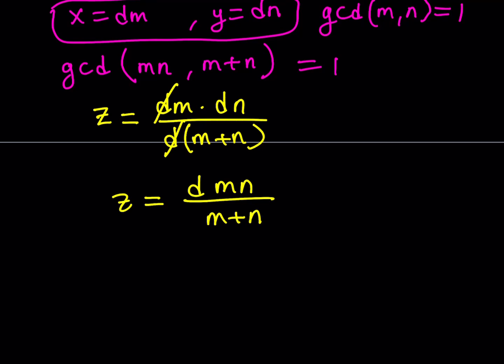Now, think about this. m plus n and mn are relatively prime. So, there is no way m plus n is going to divide mn. But z is an integer.